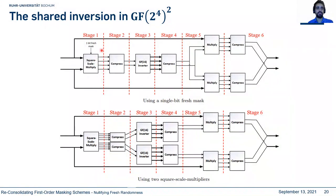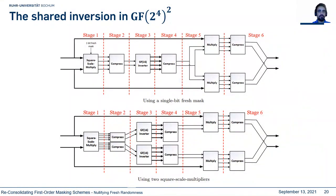We can eliminate the one fresh mask by implementing the square-scale-multiply function twice to provide two different outputs, then implementing the inverter twice. The multiplier outputs are each individually uniform, but the combined 8-bit output is not jointly uniform. The no-fresh-mask design is slightly larger due to these duplicate function instances.